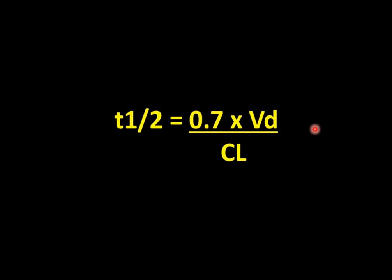If the volume of distribution is more, the plasma half-life will be high, and if the volume of distribution is narrow, the plasma half-life will be very less. The situation is reversed in case of clearance — clearance is indirectly proportional to plasma half-life. More clearance means less plasma half-life, and less clearance means more plasma half-life. These are the two basic predictors for plasma half-life.